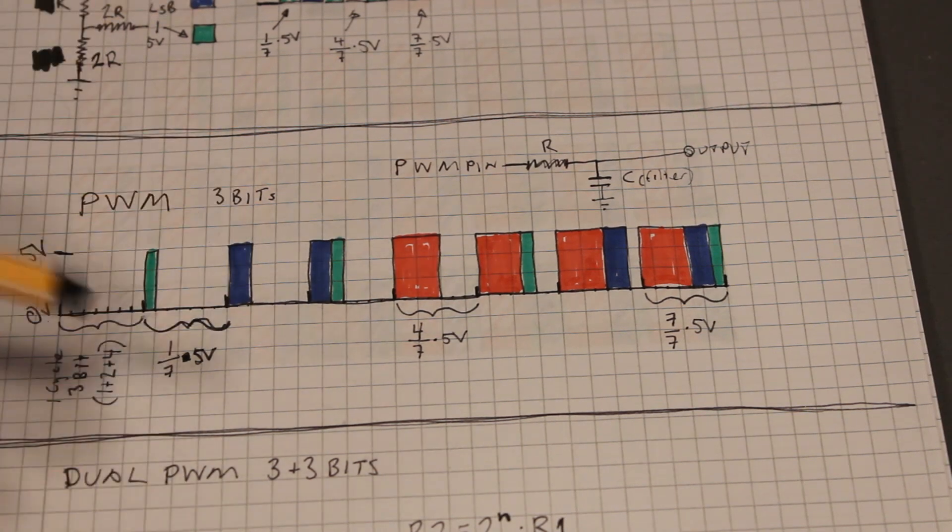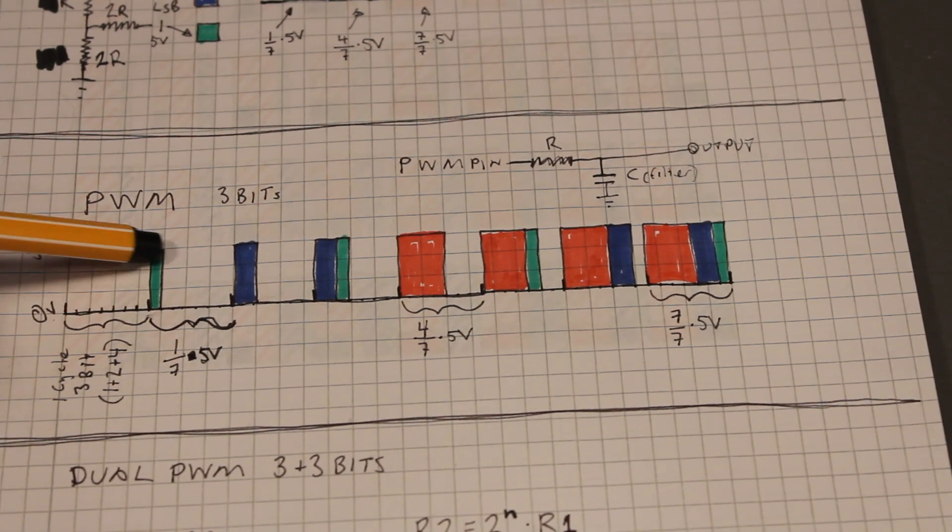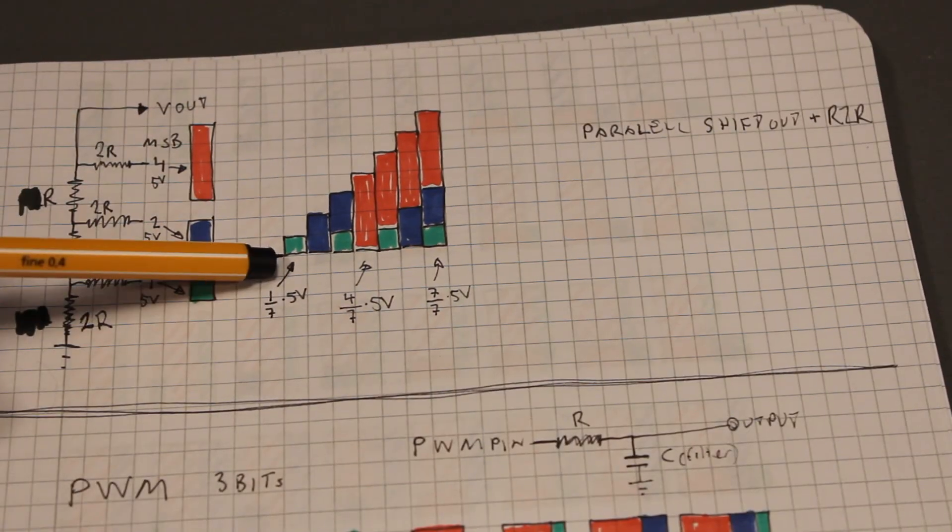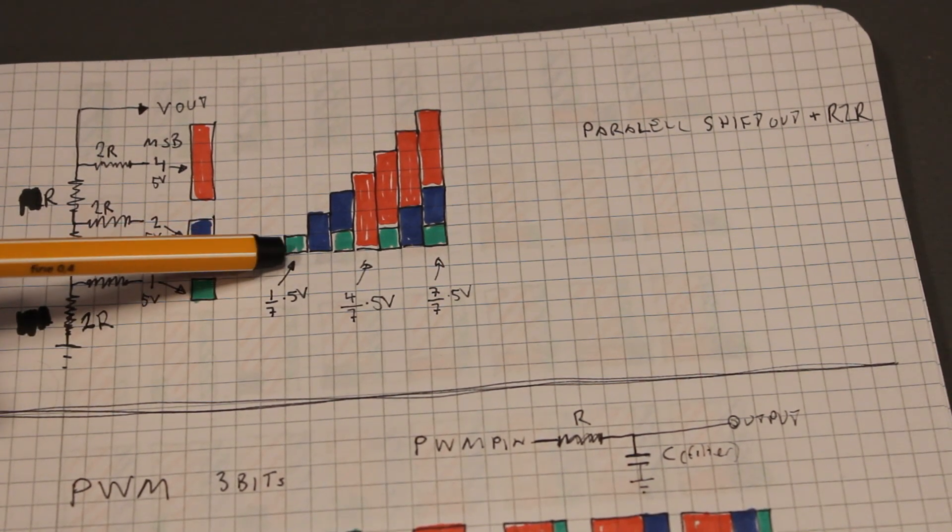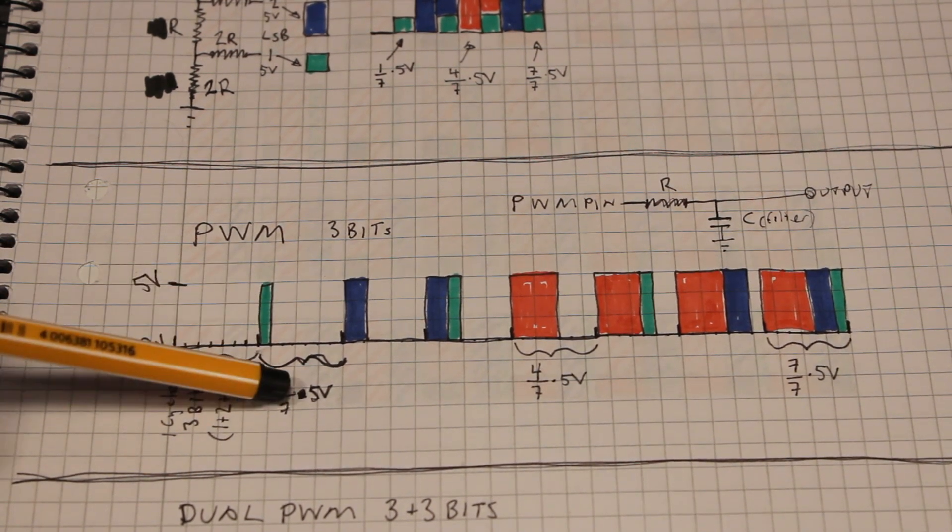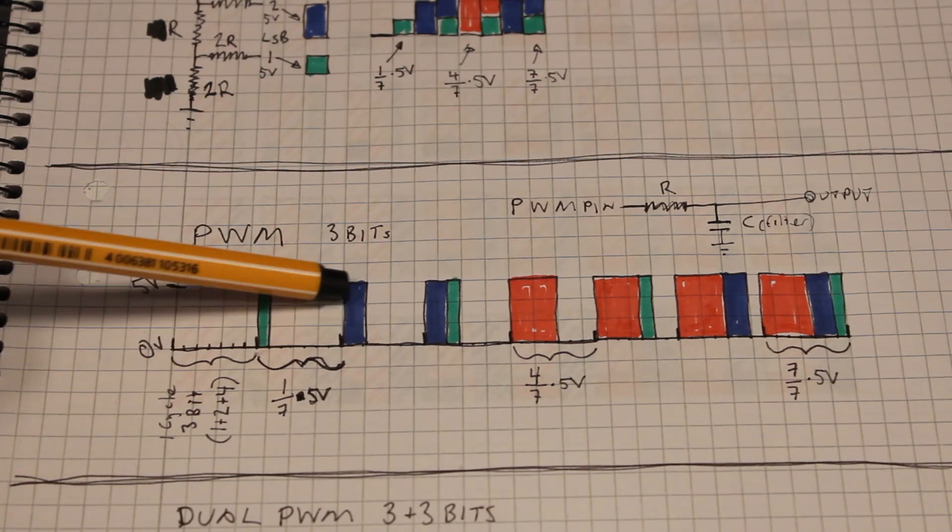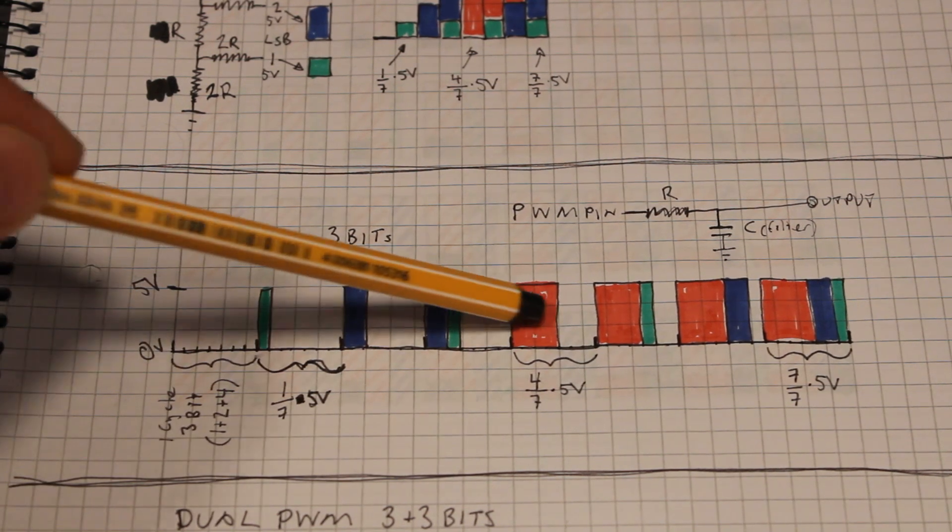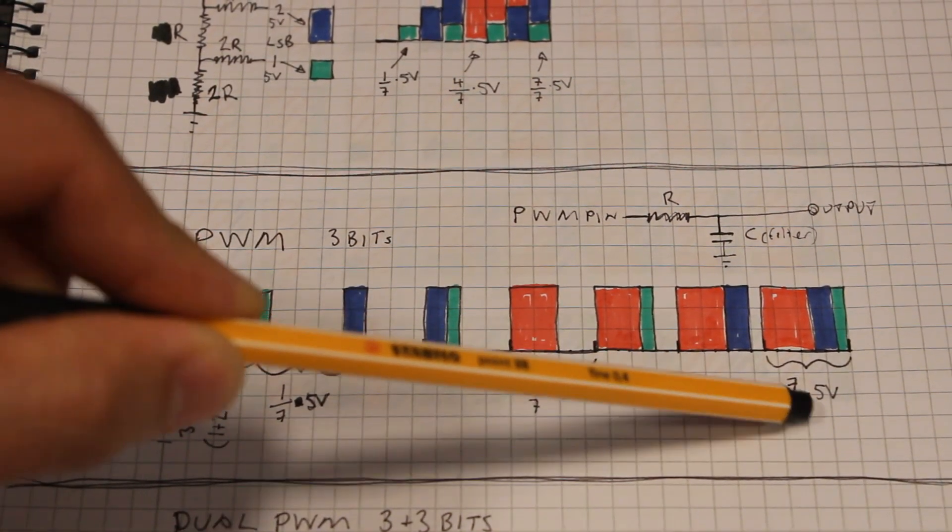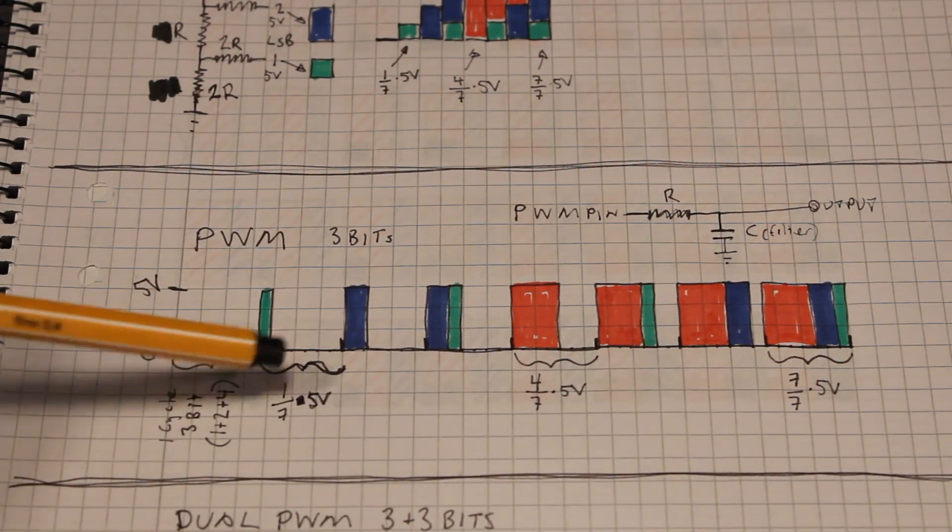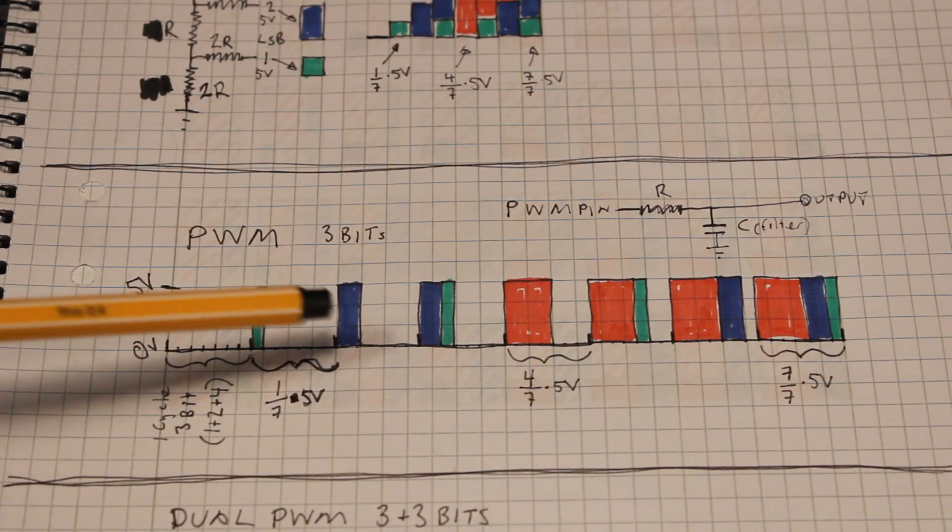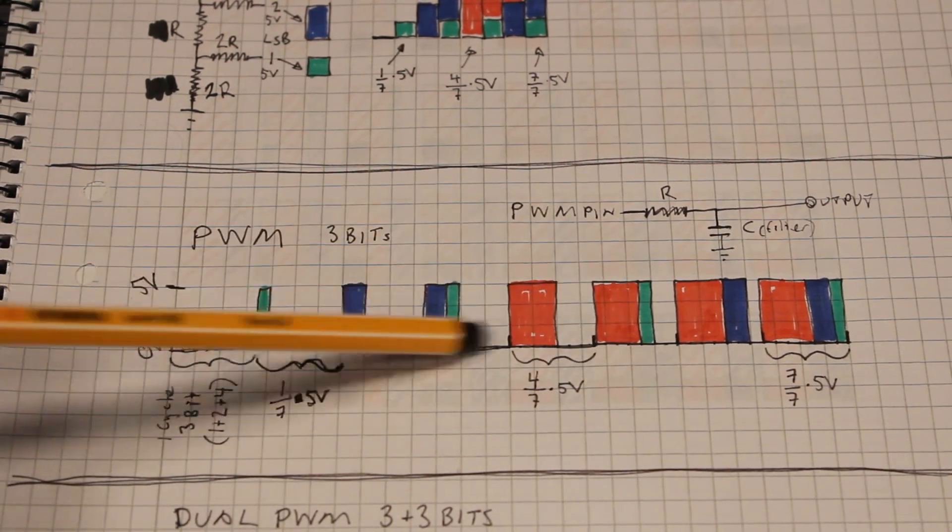If we add the one bit, then we get one seventh of five volts, the same as up here. That green dot there is one seventh of five volts. Then we add the second bit, the third bit, and finally over here we have all the bits and all the time segment is seven out of seven times five volts. If you repeat one of these values over and over the output will act as if it is a voltage between zero and five depending on which one you are sending.